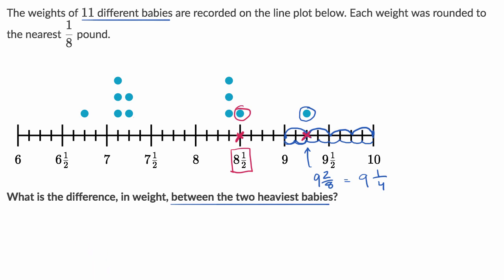So what we really need to do is figure out what is the difference between 9 and 2/8ths, or 9 and 1/4, and 8 and a half right over here. So we could set this up as a subtraction. This is going to be 9 and 1/4 minus 8 and a half. We can use these measurement scales as a number line to help us think about this.